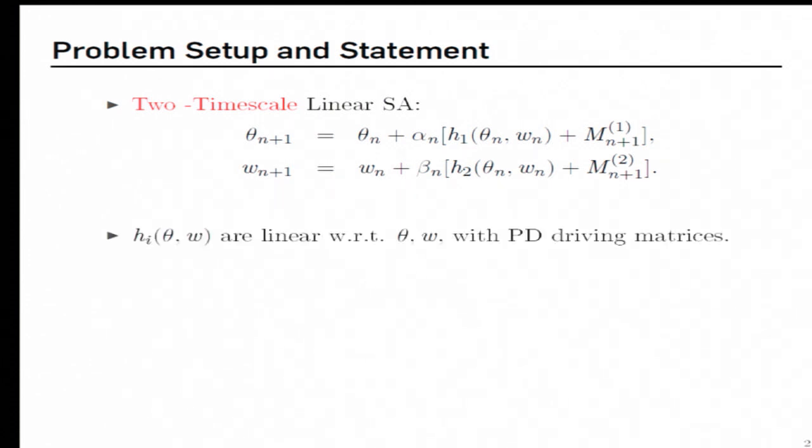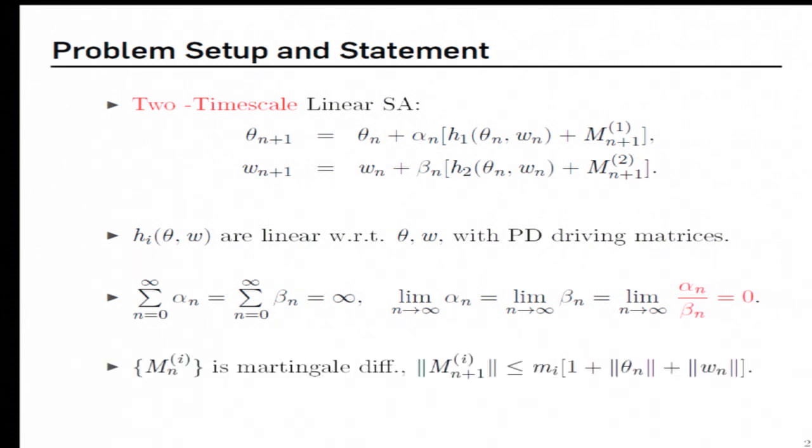In this work, we assume that these functions h1 and h2 are linear with respect to the variables theta and w, and we also assume that suitably defined driving matrices are positive definite. With respect to the step-sizes, we assume that they add up to infinity, and individually, they go down to zero. More importantly, we assume that the ratio goes down to zero. Observe that we do not assume that the step-size sequences are square-summable. With regards to the noise sequence, we assume that there are some martingale differences, and we also assume that their norms are bounded by some linear functions of norms of theta_N and w_N.